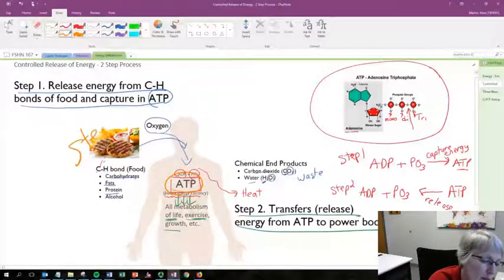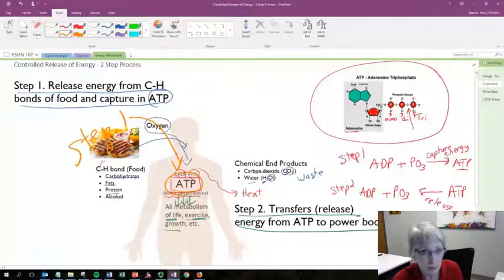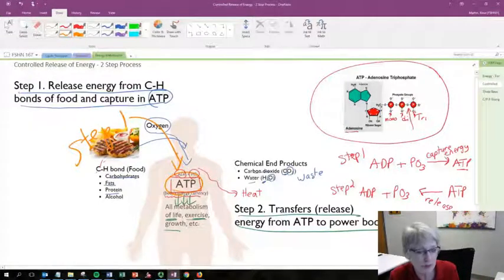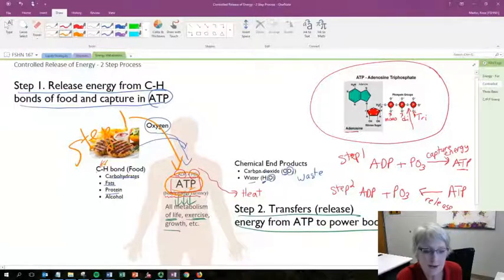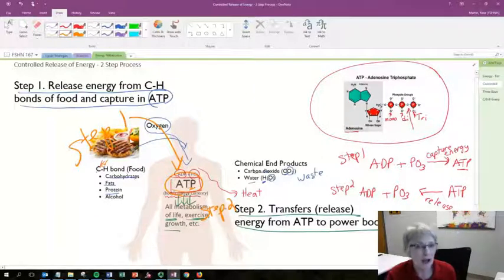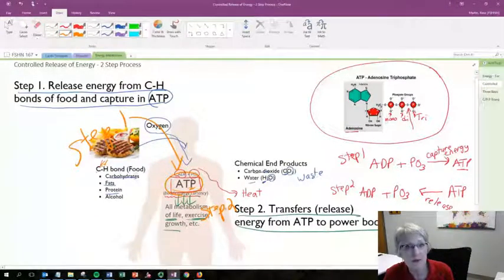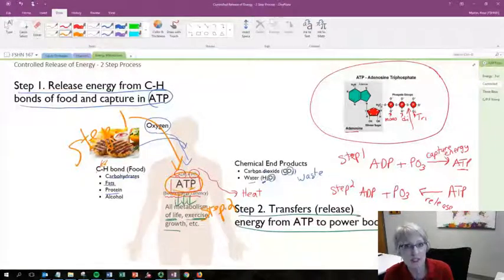Step one, we are going to create ATP by breaking that energy, releasing that energy from the carbon-hydrogen bond. And then we're going to capture some of that in that ATP. And then step two is we're going to spend it. That's how the big picture of how we control the release of energy from our food, and then use it to power our body.